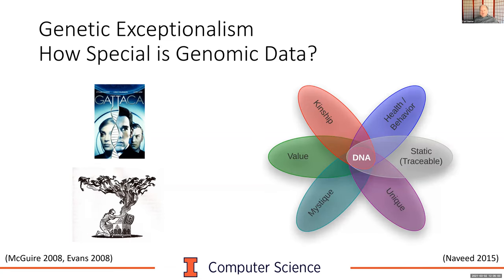Here's a pinwheel of what's special about DNA. Starting with its uniqueness — except for identical twins, everybody has their own unique DNA. It's also static, meaning with notable exceptions it stays the same throughout a lifetime. It has implications for health and behavior, it's determinative of kinship, and it has value — the data is quite actionable for treating conditions with genetic origins. Above all, it has a mystique that goes well beyond the sum of these other properties, and that mystique has to be taken into account when thinking about security and privacy concerns.